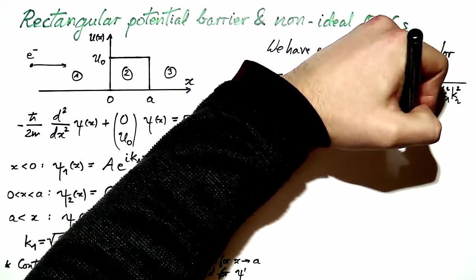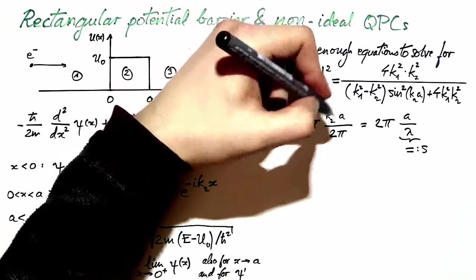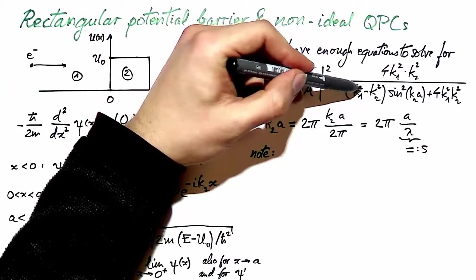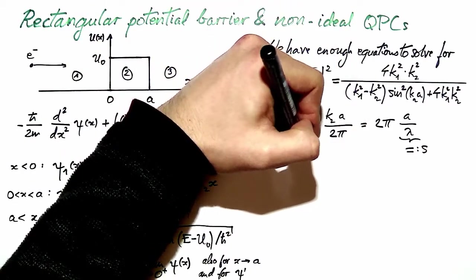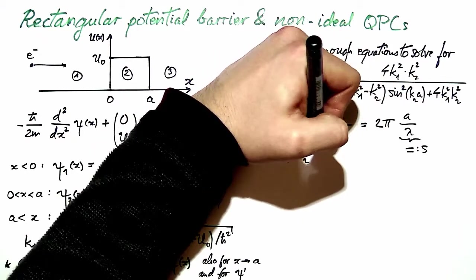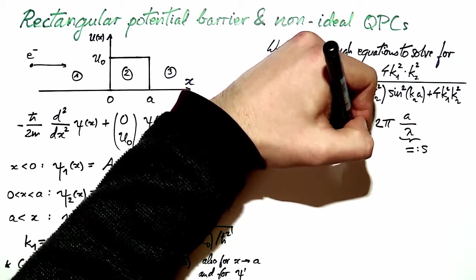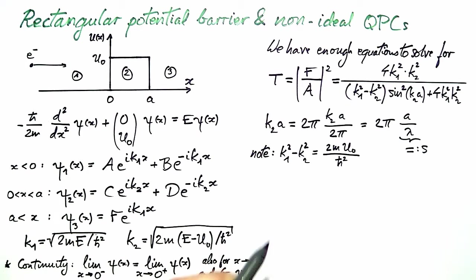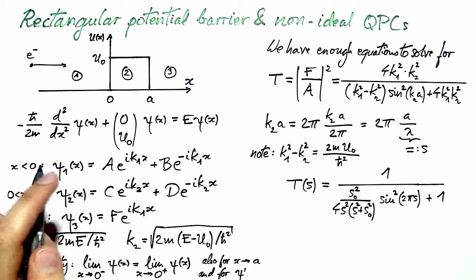And this ratio, I will denote s. I further note that I have a simple expression for the difference of k1 squared and k2 squared, which I can directly recognize in this line here. Plugging everything in, I obtain the following expression for t.